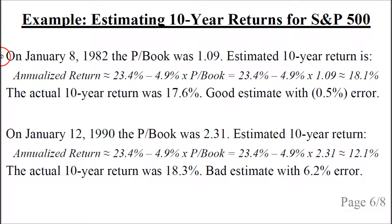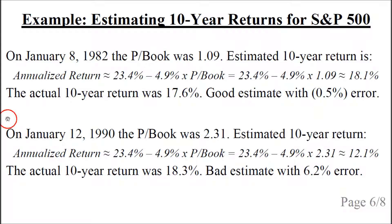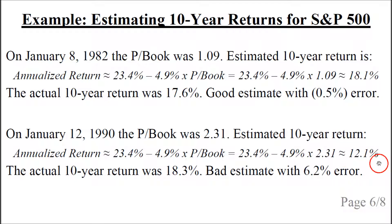Let's give a few examples of estimating 10-year returns for the S&P 500. On January 8, 1982, the price-to-book ratio was 1.09. Using the formula from the previous slide, we plug in the price-to-book ratio and get an estimated 10-year annualized return of 18.1%. The actual 10-year return from that starting date was 17.6%, so our estimate of 18.1% is quite good — the error is only minus half a percentage point. Now let's look at another date: January 12, 1990, where the price-to-book ratio was 2.31. Using the same formula, we get an estimated 10-year return of 12.1%.